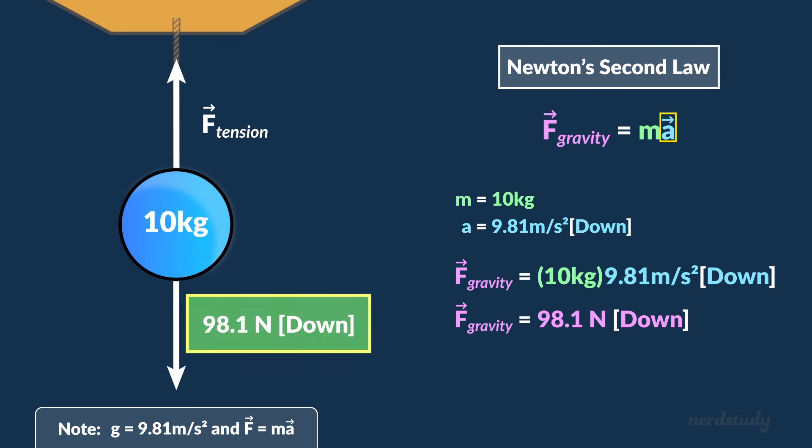And since the gravitational force must be cancelled by the tension on the rope, we find that the tension force being applied by the rope on the ball is 98.1 Newtons upward. Awesome!